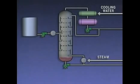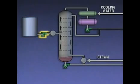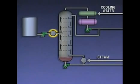Let's take a look at a simplified representation of a distillation system. In this example, the feed is stored in a tank. During operation, a pump is used to move the feed from the tank to a preheater. In the preheater, the mixture is heated under pressure to just below its boiling point.